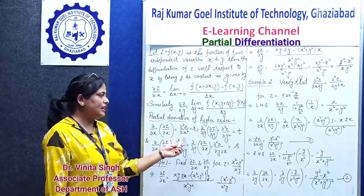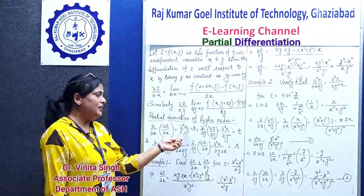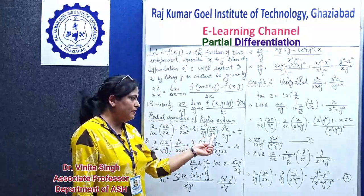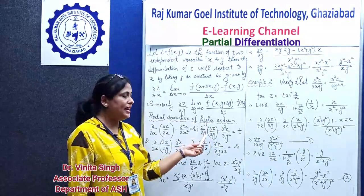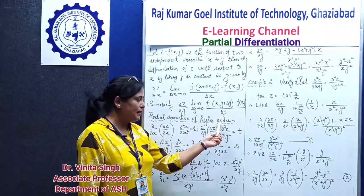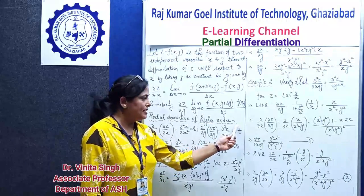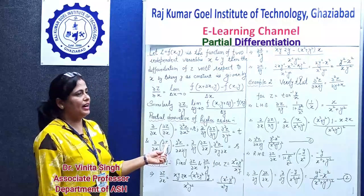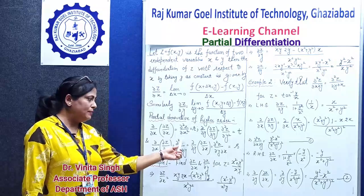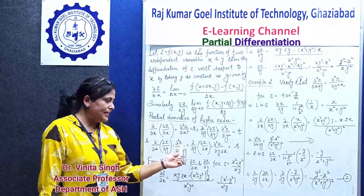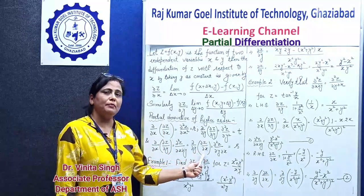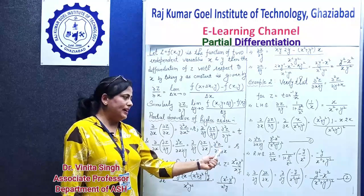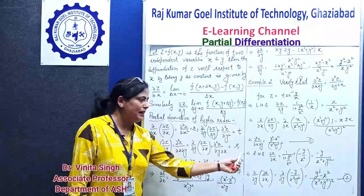The symbol ∂²z/∂x² means the partial differentiation of z with respect to x twice, and it is known as r. Similarly, ∂z/∂y differentiated again with respect to y gives ∂²z/∂y², represented by small t. If you have ∂z/∂y and differentiate with respect to x, that is ∂²z/∂x∂y. And if you differentiate ∂z/∂x with respect to y, that is ∂²z/∂y∂x, also denoted by the symbol s.